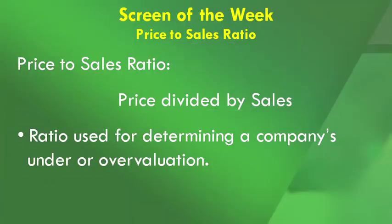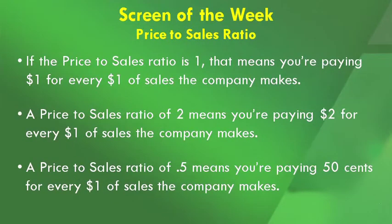This is the first time we are talking about price-to-sales ratio here, and interestingly, it's one of Kevin's favorite valuation metrics to screen for stocks. The price-to-sales ratio is price divided by sales, used for determining a company's under or over valuation. For example, a price-to-sales ratio of one means you're paying one dollar for every one dollar of sales the company makes.